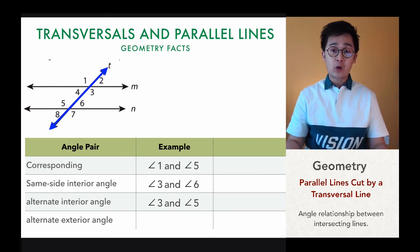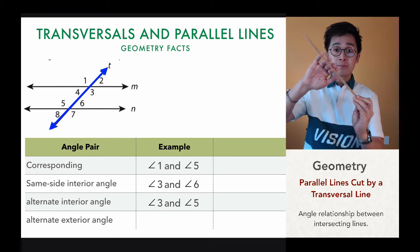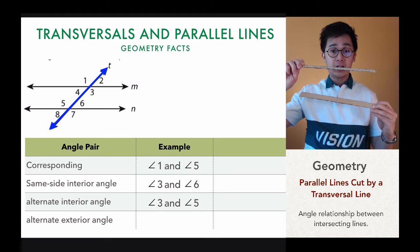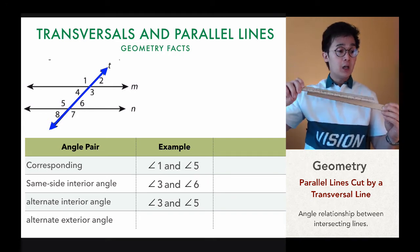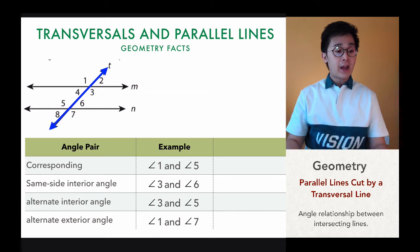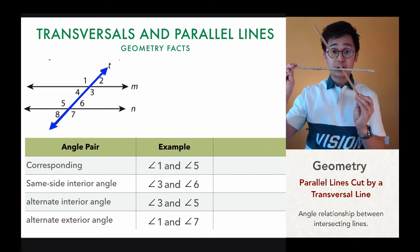For the last relationship, we have the alternate exterior angle. The two angles are alternating on the transversal, but this time they are outside the parallel lines. An example of alternate exterior angle would be angle one and angle seven, and another pair would be angle two and angle eight. These are the four relationships we can establish when working with parallel lines cut by a transversal.